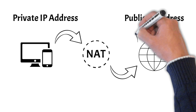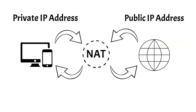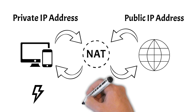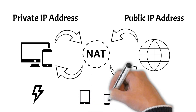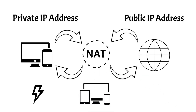When the response comes back, NAT translates the public IP address back to the appropriate private IP address within your local network and directs the data to the correct device. This process happens seamlessly and almost instantaneously, allowing multiple devices on the same local network to share a single public IP address.